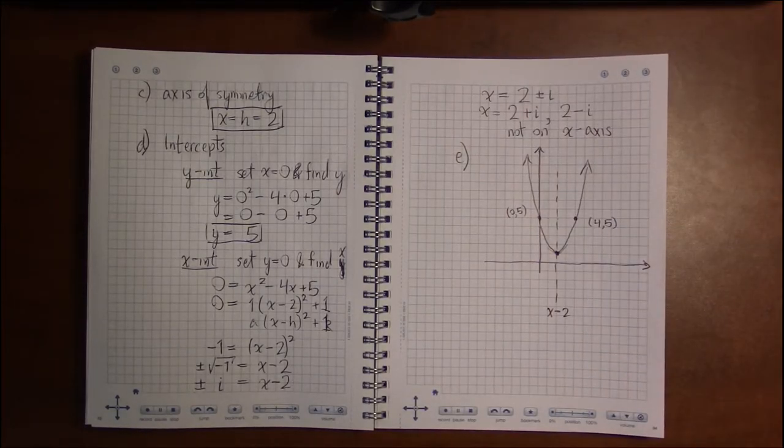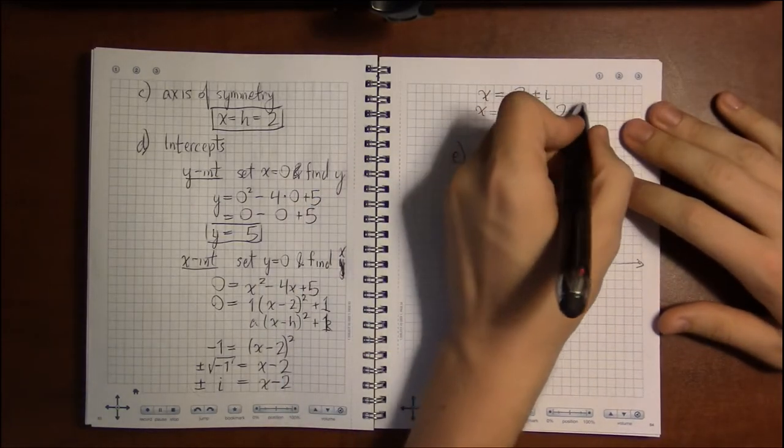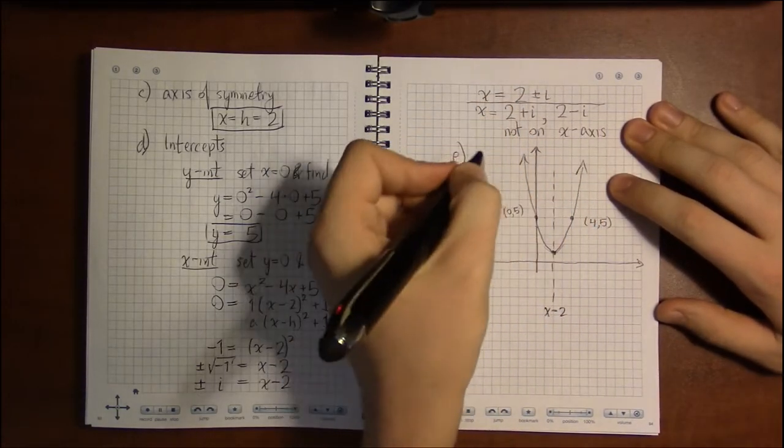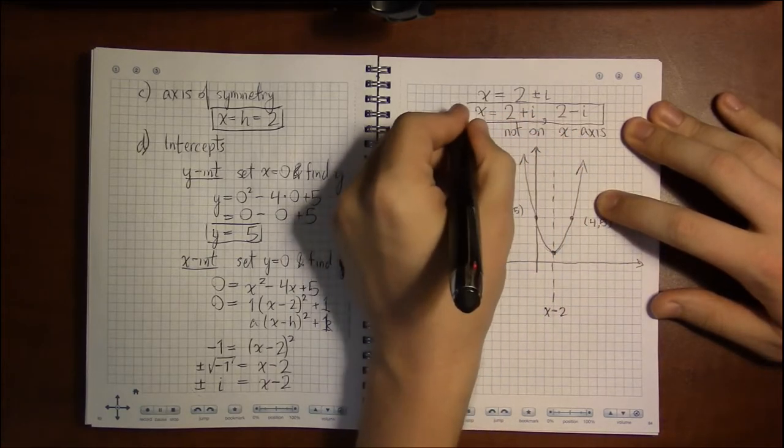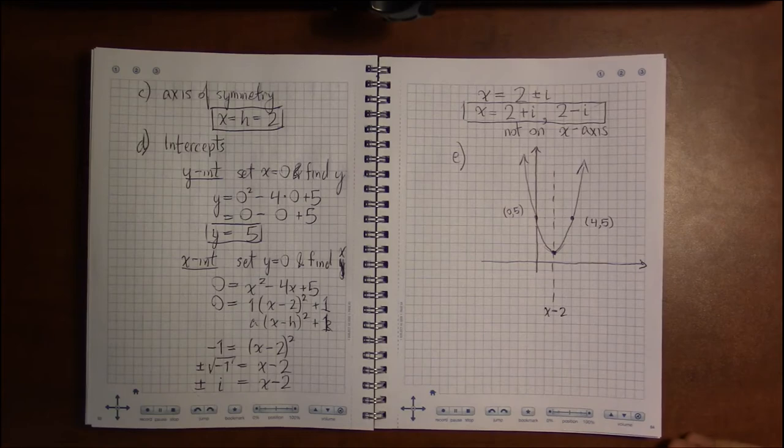That's all. So you can put this as your answer for part d, or you can say as the book does that there are no real roots or no real x-intercepts. Either way is fine.